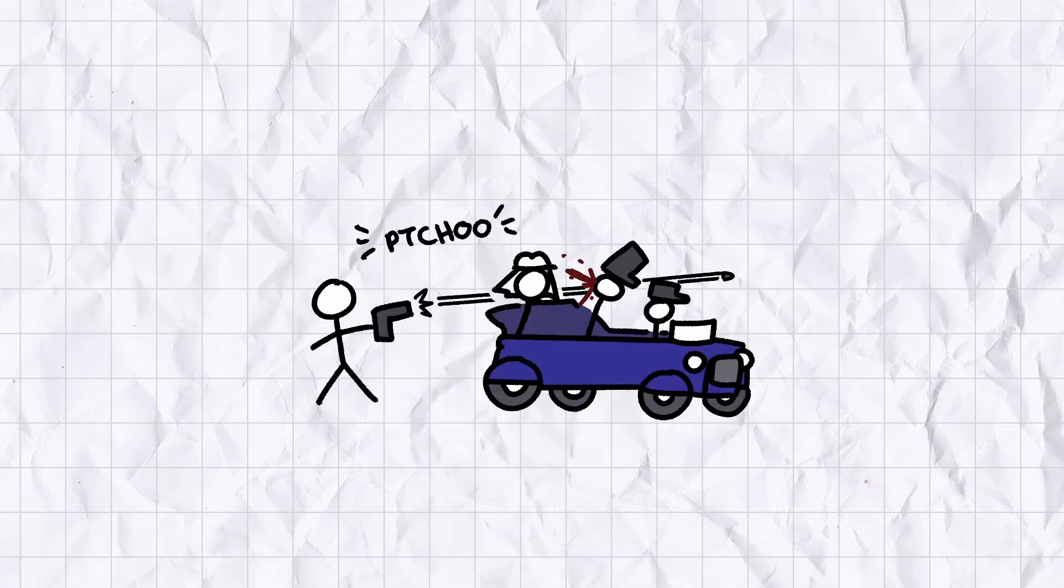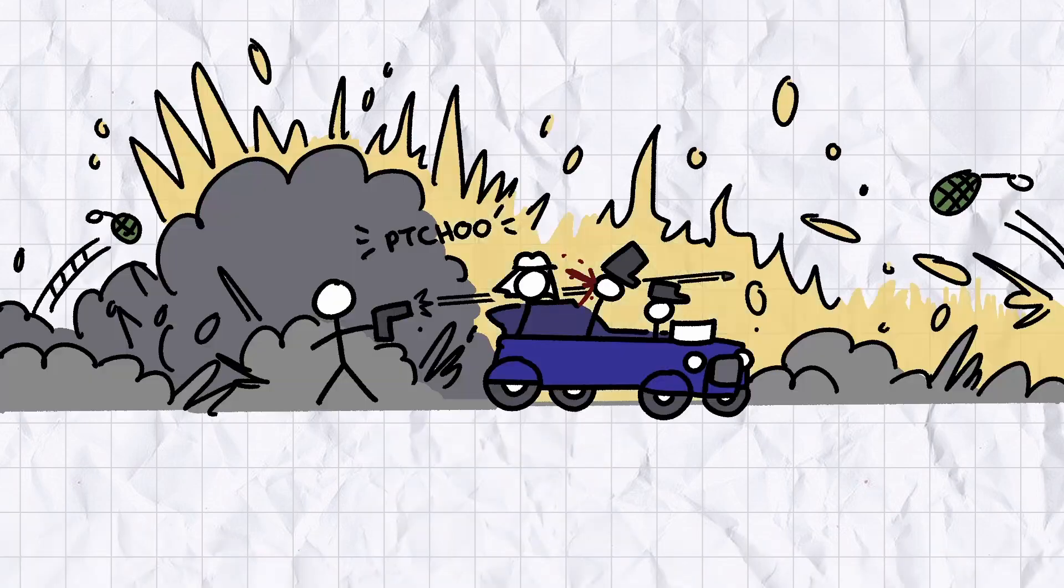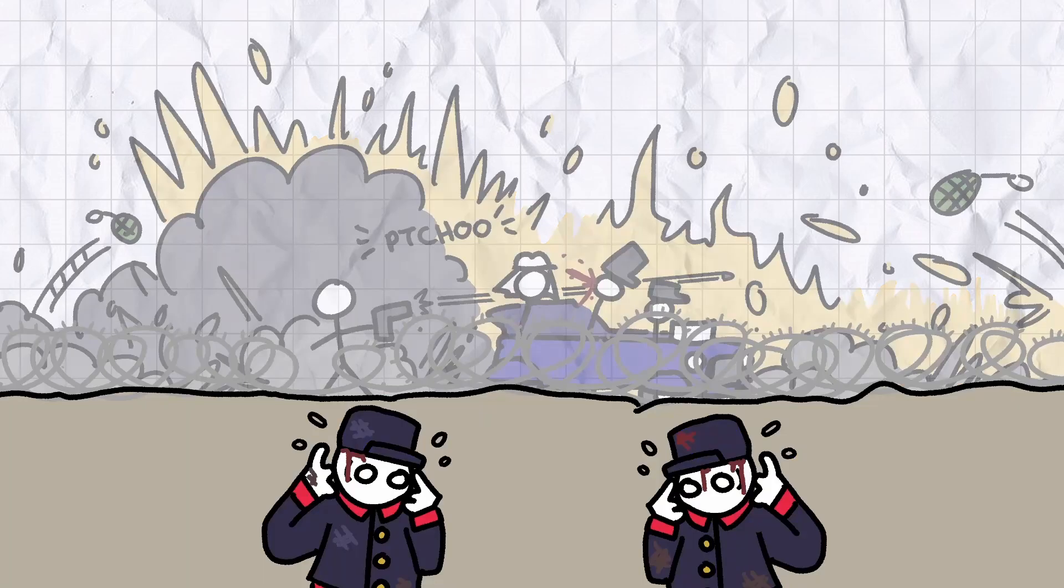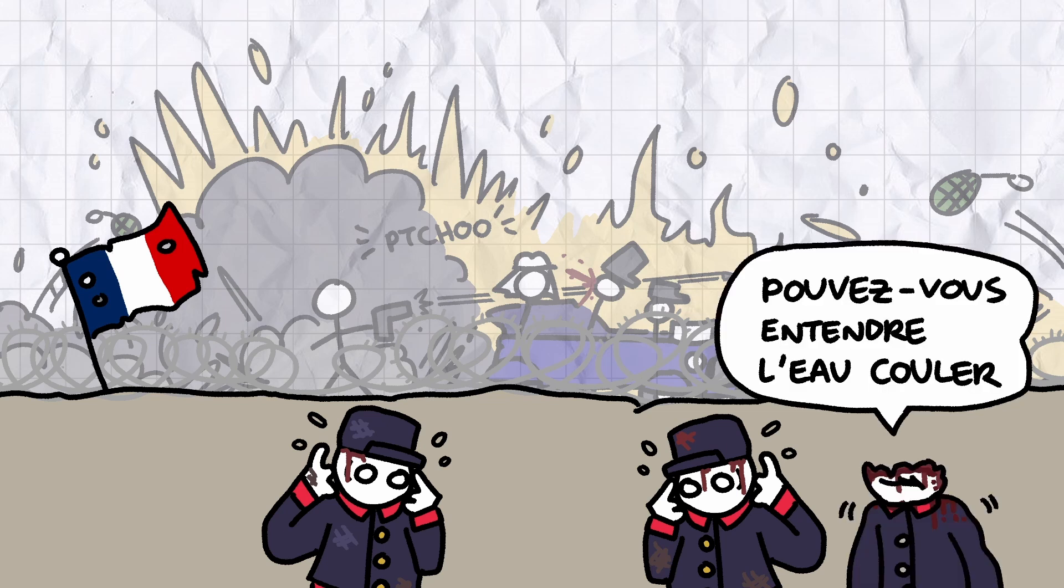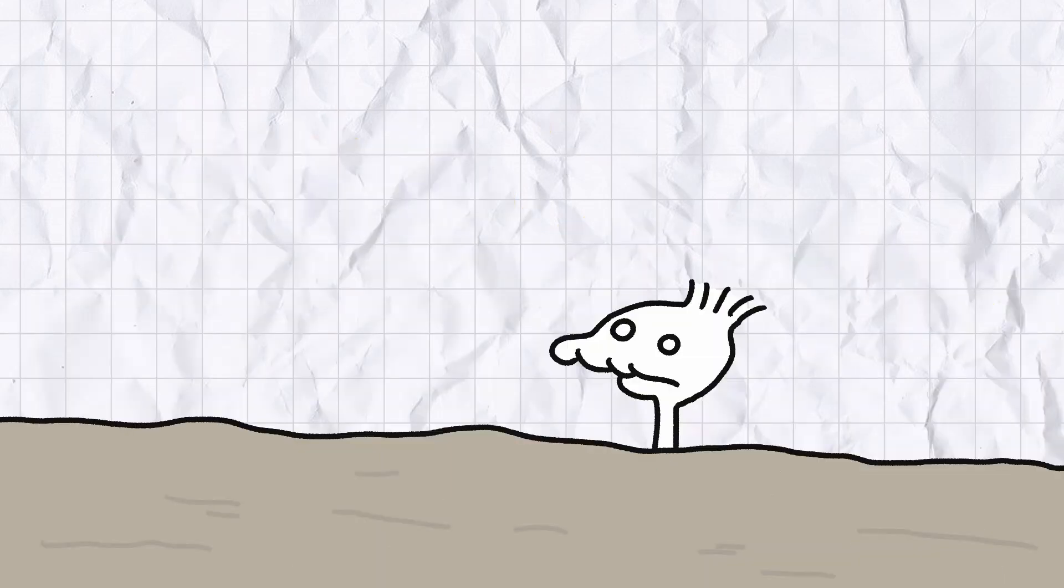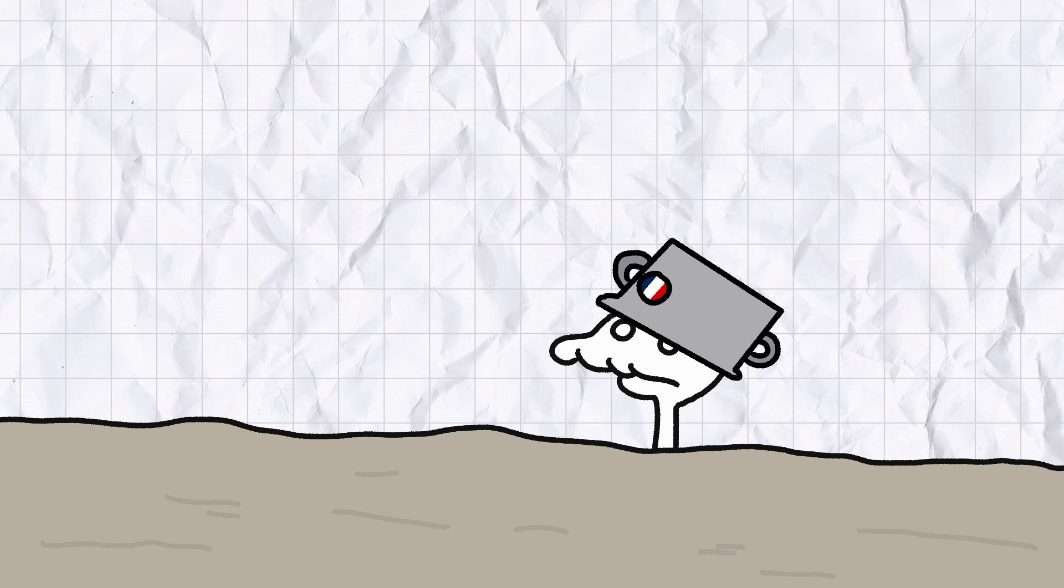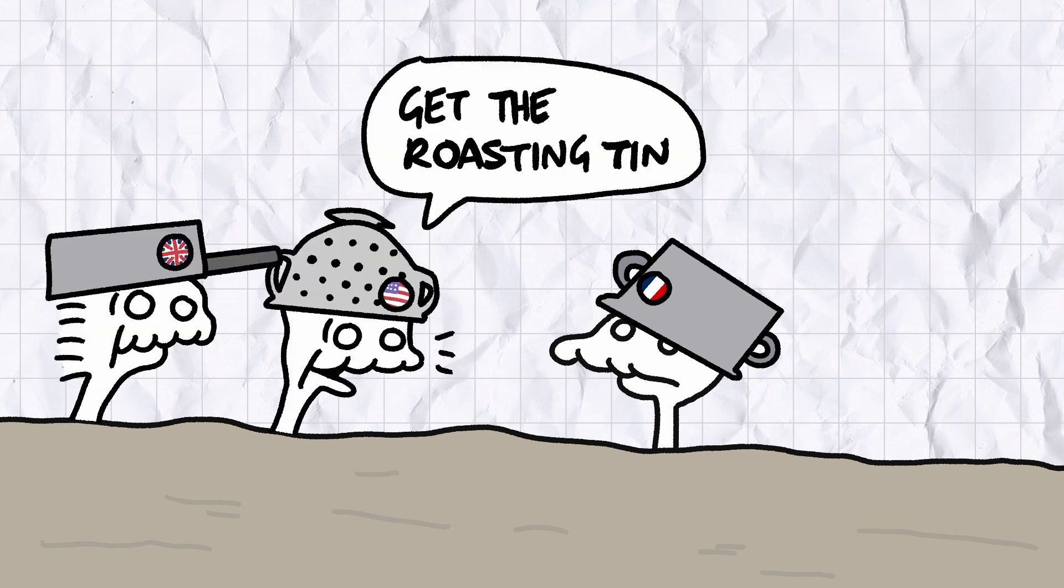31 years later, a posh bloke gets shot in Sarajevo and everyone on the continent decides to start murdering each other. The air over the trenches was thick with bullets and shrapnel, and the military masterminds of the French army realised that soldiers were a lot worse at fighting after they'd been shot in the head. To remedy this issue, French soldiers were issued steel helmets, and it was such a good idea that every other country shamelessly copied them after about five minutes.